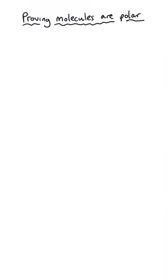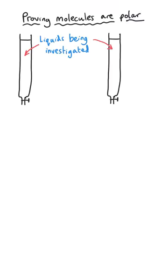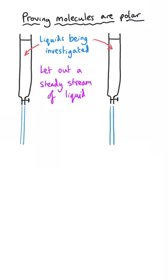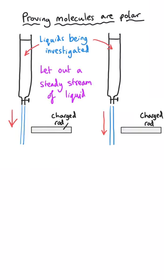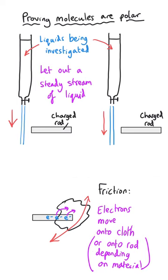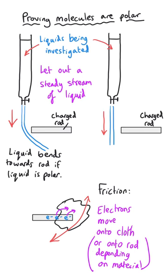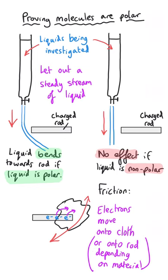You can actually do an experiment to prove that a molecule is polar — not just whether it contains polar bonds. In this experiment, you set up a burette containing the substance you want to investigate, start to let that liquid out through the tap with a steady stream flowing, then take a charged rod that's been charged using friction to transfer electrons between the rod and the cloth. The liquid will bend towards the charged rod if it is polar, and will do nothing if it is non-polar.